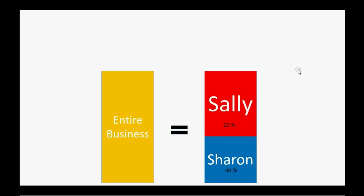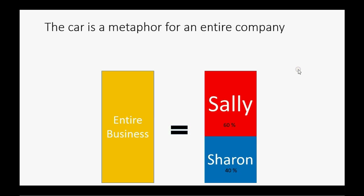The car in that previous example was a metaphor for an entire company. In other words, all the assets together of one business can be owned jointly in the same way that Sally and Sharon share the car. Sally could be a 60% owner of an entire business, Sharon could be a 40% owner of that very same business. But when it comes to an either-or question, Sally would get what she wants, but Sally can't tell Sharon that she cannot participate. These ideas about owner's equity come from common sense and fairness, and we experience them in our everyday life.